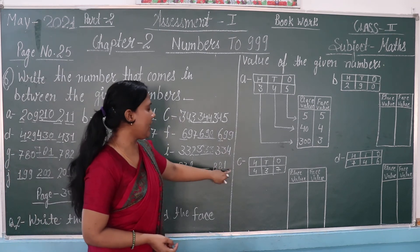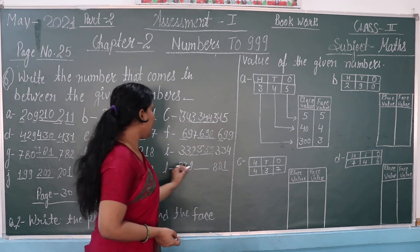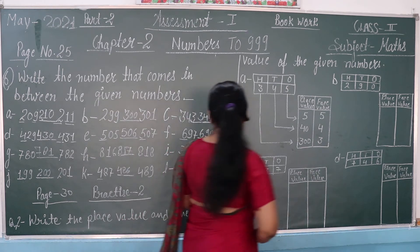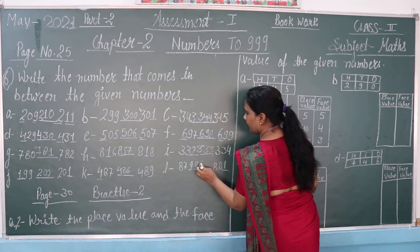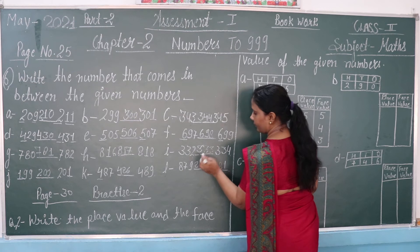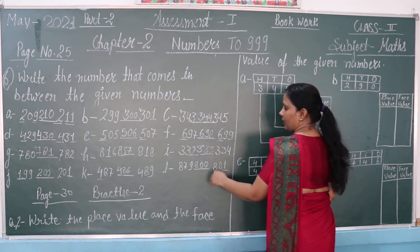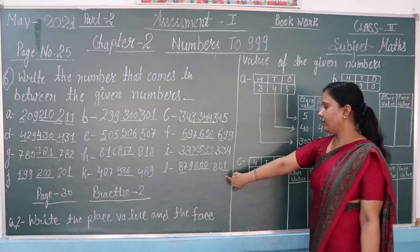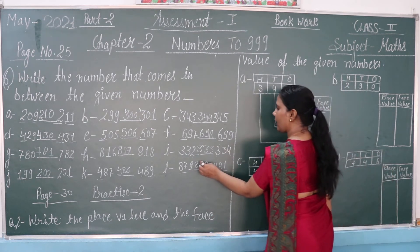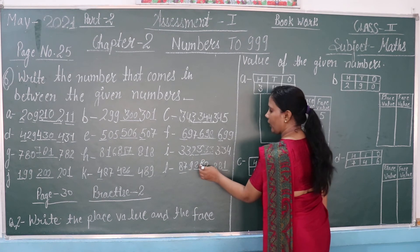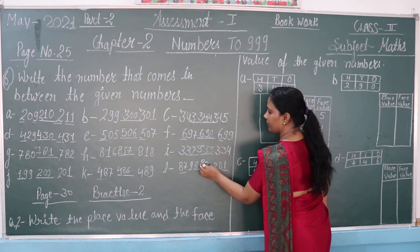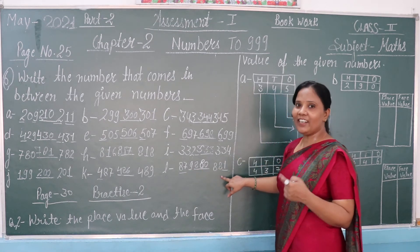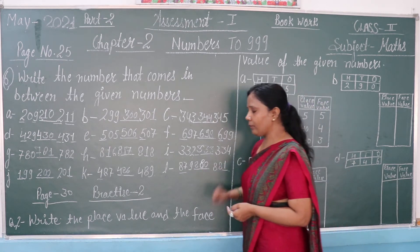Next: 879 and 881. The answer will be 880. Check: 879, 880, 881 — correct. This question set is now completed.